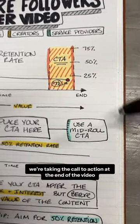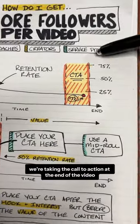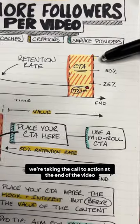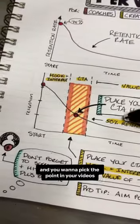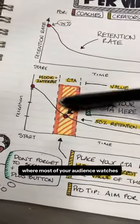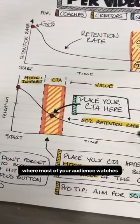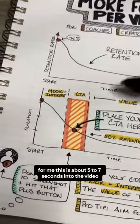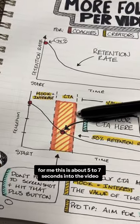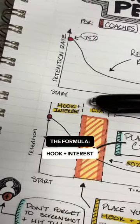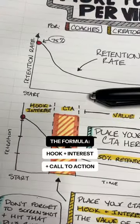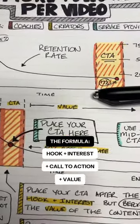All we're doing is a mid-roll CTA — we're taking the call to action at the end of the video and moving it to the front. You want to pick the point in your videos where most of your audience watches. For me, this is about five to seven seconds in. The formula is: hook and interest, call to action, then value.